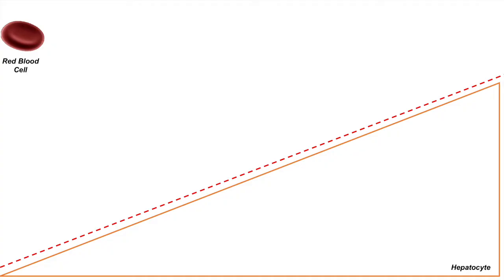A red blood cell is just a non-nucleated cell that is mainly composed of a protein called hemoglobin. So a red blood cell is just pretty much like a bag of hemoglobin — it doesn't really have any other organelles, doesn't have mitochondria, doesn't have a nucleus. It just is composed of hemoglobin. When your red blood cell is broken down, it will release hemoglobin. Now, hemoglobin is a protein molecule that contains four polypeptide chains — two alpha-like chains and two beta-like chains with a heme prosthetic group. The heme prosthetic group contains an iron moiety in the center of it, which allows it to bind to oxygen.